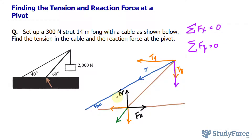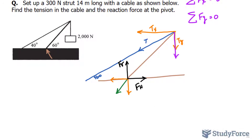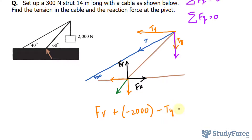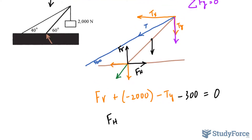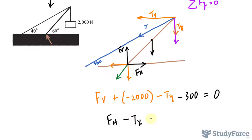This force is going up — we'll call up positive and down negative. For the forces along the vertical: F sub V plus negative 2,000 (the weight of the object), minus T sub Y (the y component of tension), minus 300 (the weight of the strut) equals zero. For the x components: F sub H minus T sub X equals zero.